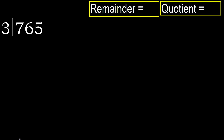765 divided by 3. 7 is not less, therefore with 7. 3 multiplied by which number is nearest to 7 but not greater? 3 multiplied by 3 is 9 — 9 is greater. Multiplied by 2: 6 is not greater, ok.